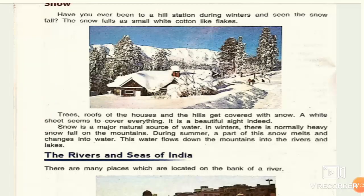Have you ever been to a hill station during winter and seen snowfall? Many of you must have seen snowfall when you go to a hill station with your parents. Snow falls as small white cotton-like flakes. Trees, roofs of houses, and hills get covered with snow. You can see in this picture — the roof, the street, the trees, and the mountain are all covered with snow, like a white sheet covering everything. It is indeed a beautiful sight.